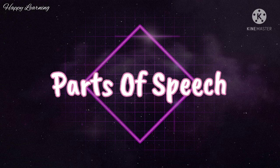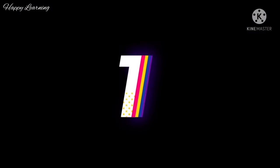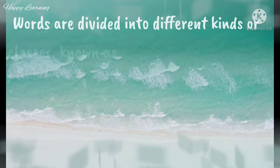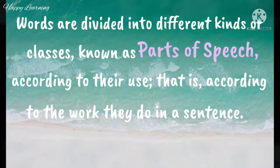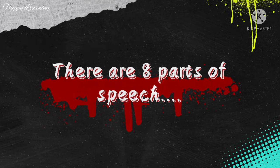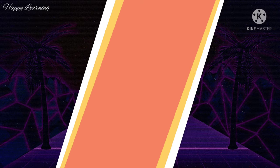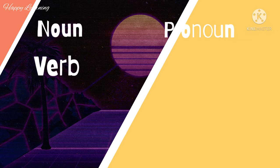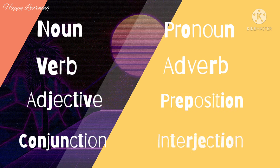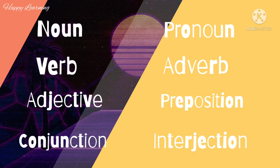Hello everyone. Today's topic of discussion is the parts of speech, so without any delay let us begin. Words are divided into different kinds of classes known as the parts of speech, according to their use — that is, according to the work they do in a sentence. There are eight parts of speech: noun, pronoun, verb, adverb, adjective, preposition, conjunction, and interjection. Now let's get a brief description about them.